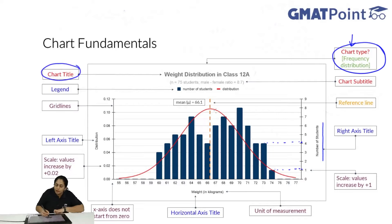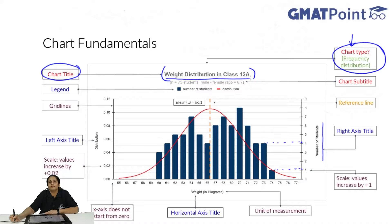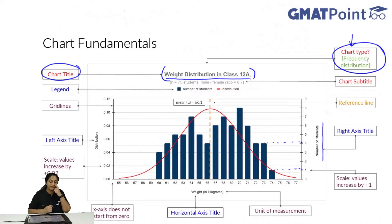The second thing to look at is the chart title. The chart title tells you the weight distribution in class 12A - so you have the distribution of weights by number of people in class 12A. These are students, and what their weights are is given in this frequency distribution diagram. The chart title is generally the clue to understanding a particular chart. A good chart title will help you easily understand what is actually given; a bad chart title might leave you confused. So the first thing you should always do is read the chart title and try to understand what is being depicted.